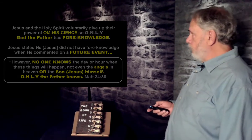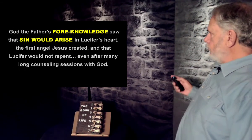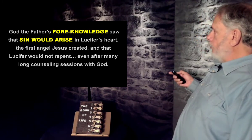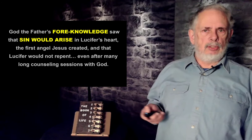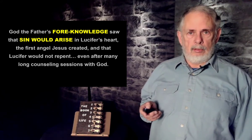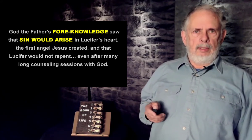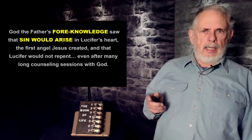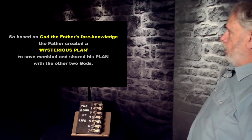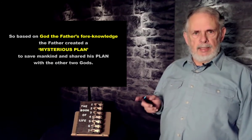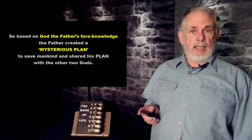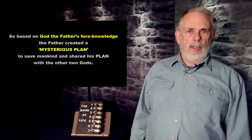God the Father's foreknowledge saw that sin would arise in Lucifer's heart — Lucifer being the first angel that Jesus created — and that Lucifer would not repent even after many long counseling sessions with God. Lucifer wanted to do sinful things and would not listen to reason. Based on the Father's foreknowledge, the Father created a mysterious plan — which is what the Bible calls it — to save mankind, and he shared this plan with the other two gods.